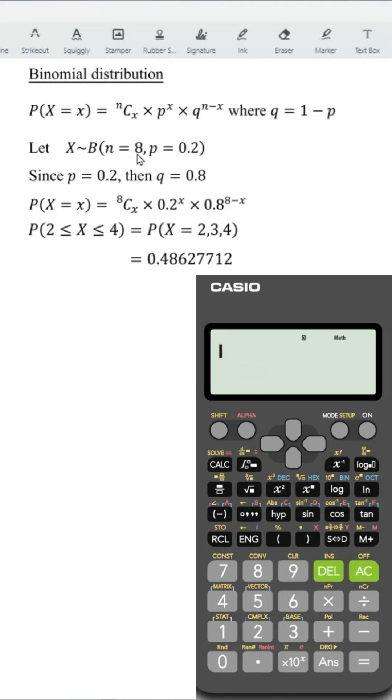We have n, which is the number of trials 8, p is the success rate which is 0.2, q is the failure rate which is 1 minus p, so we have 0.8.